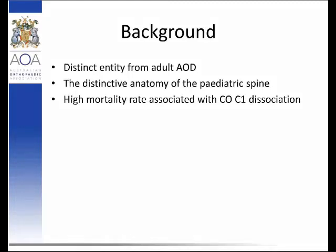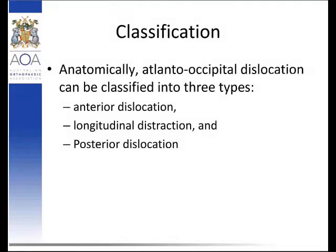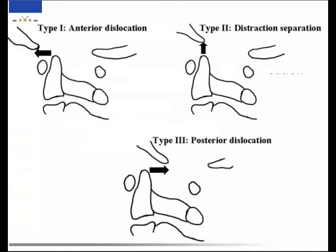For classification, it's primarily a three-tier system in relation to the occiput and the dens. The three types are anterior, posterior, and distraction. From our series, the type 2 distraction was associated with the highest survivorship.